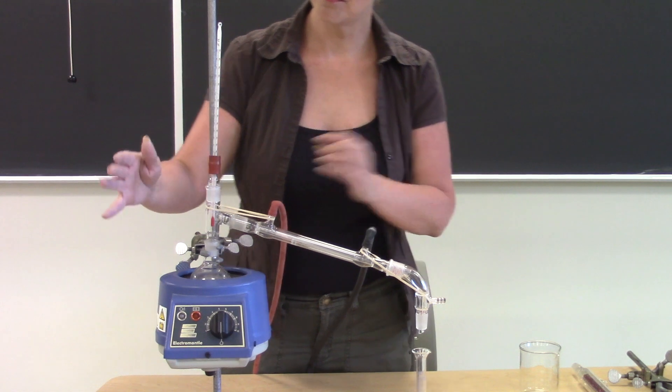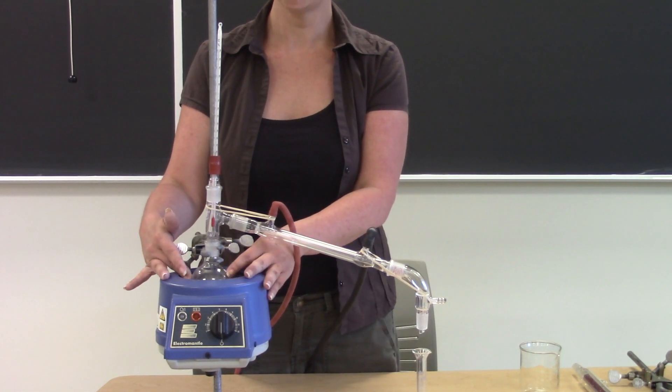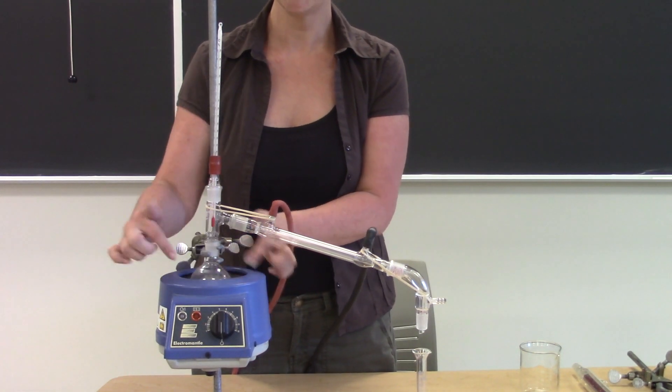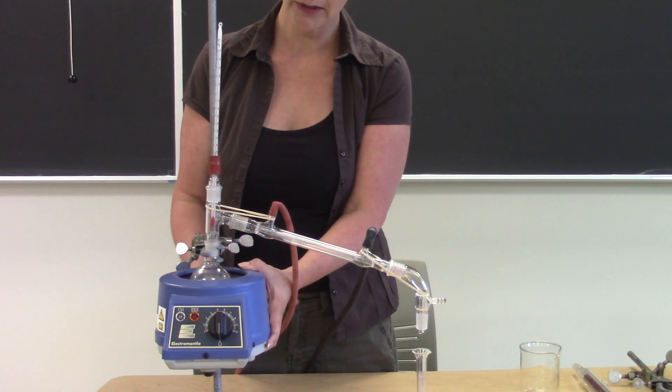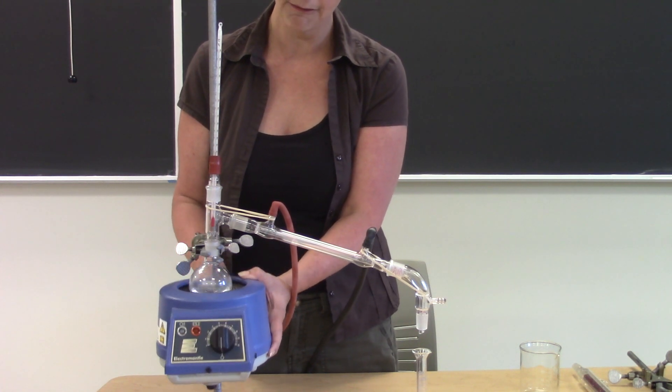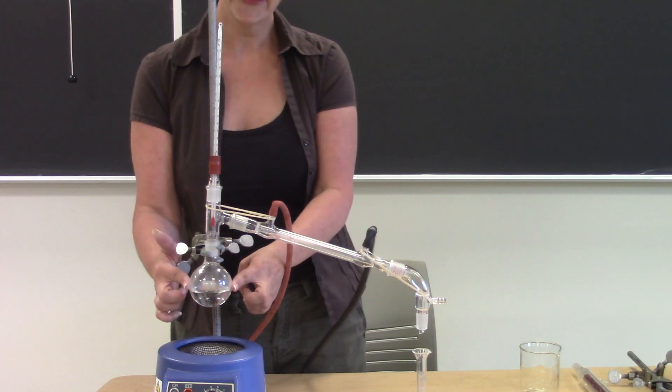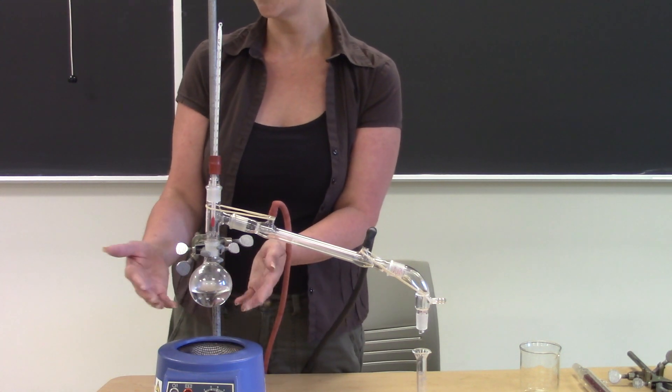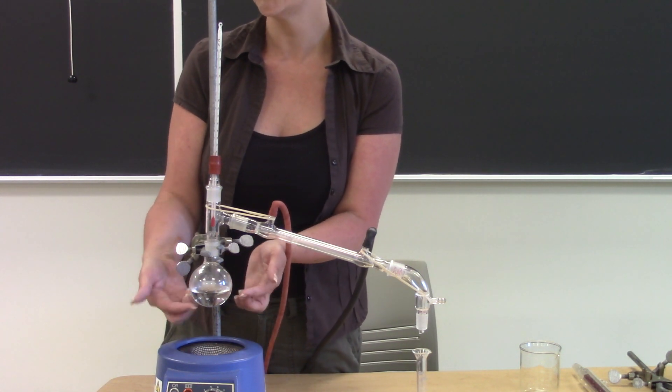So the flask that you're going to be distilling from is inside this big heating mantle. So I'm just going to lower that down so that you can see the flask. I have a flask here that, just for this demonstration, has some water in it with some boiling chips.